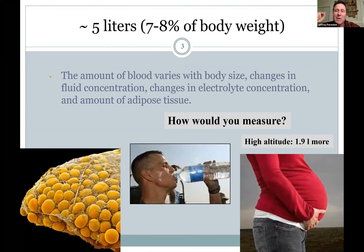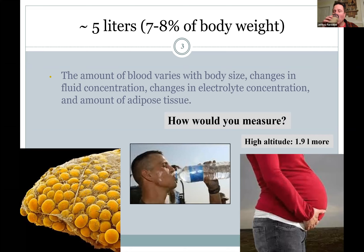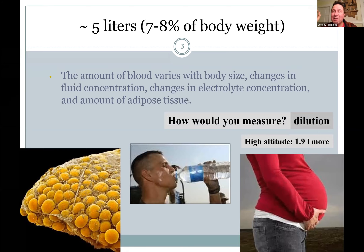How can you measure your blood volume? Well, you could inject a small amount of some substance that you don't break down, let it mix into your blood as your heart pumps it around, then take a sample and look at the percentage of that chemical in your blood. It dilutes out and you can do the math to figure out the total volume.